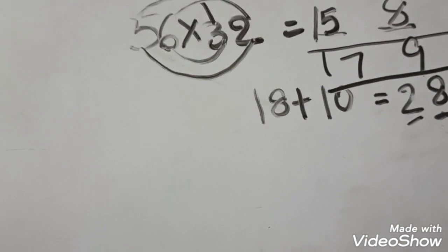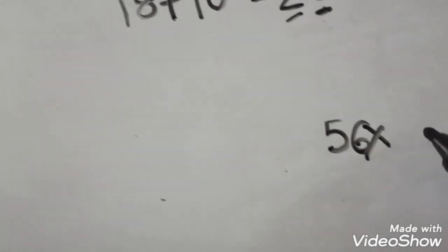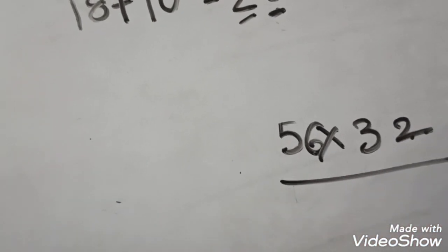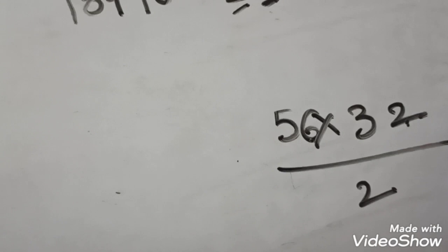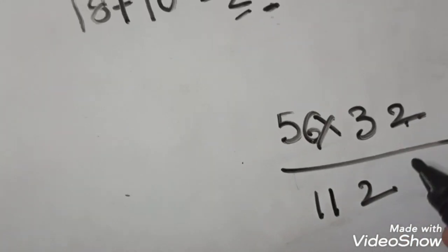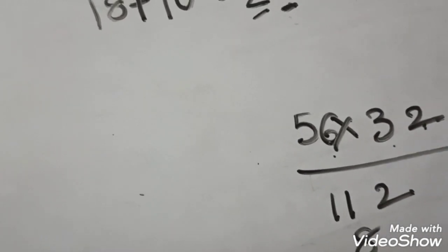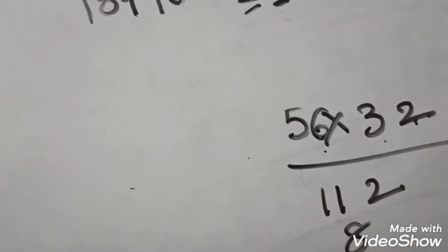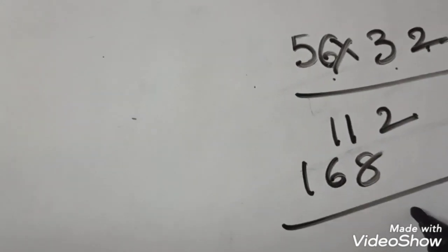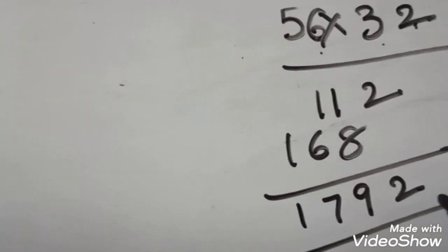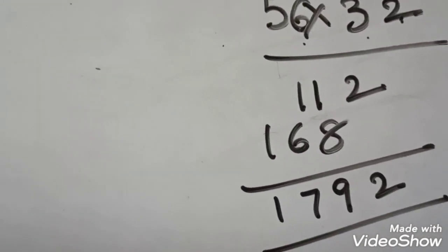If we do the normal multiplication, 56 into 32. Two sixes are 12. Write 2. Two fives are 10, 10 plus 1 is 11. Three sixes are 18. Three fives are 15, which is 16. We get 2, 9, 7, 1. We will get the same answer.